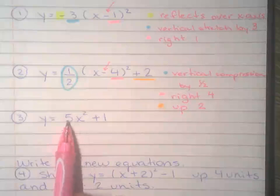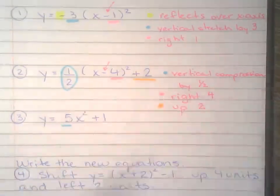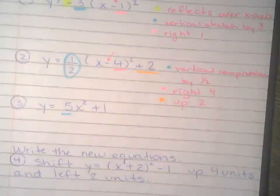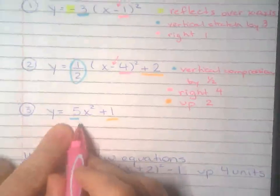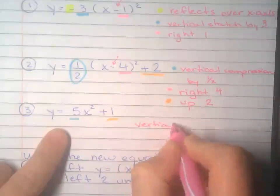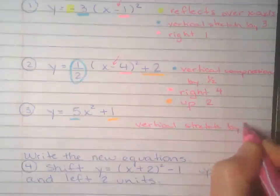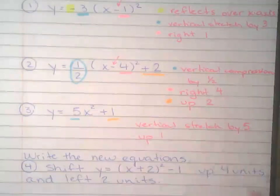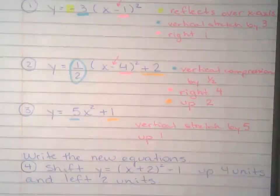One more. So this is a. And this is k. So a, because a is greater than one, it's vertical stretch by five and vertical shift up one. You can just do up one. You don't have to write the whole shebang.